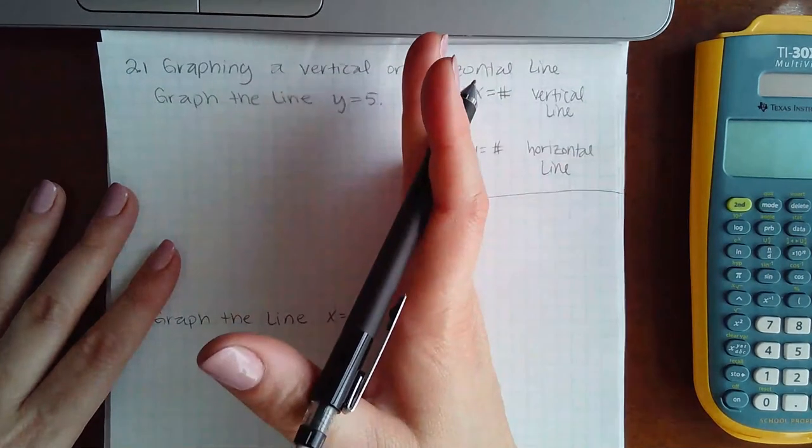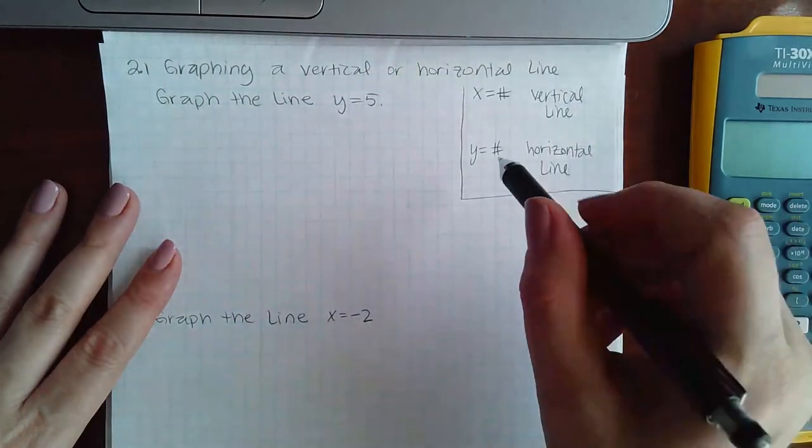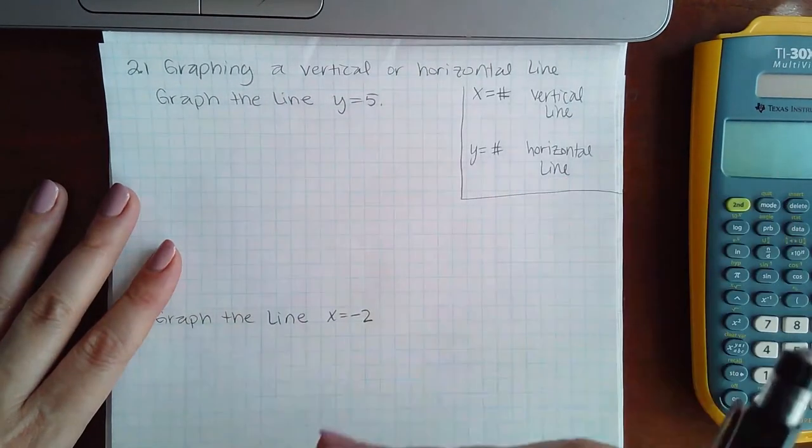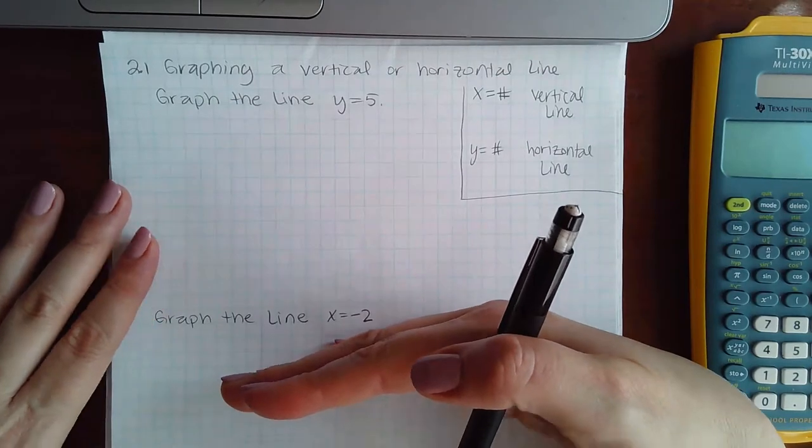If it's x equals zero, it'll land on top of the y-axis. And if it's y equals zero, it'll land on top of the x-axis.